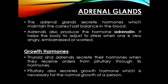Now let's discuss the adrenal glands. Adrenal glands secrete hormones that maintain the correct salt balance in the blood. Adrenal glands also produce the hormone adrenaline, which helps the body adjust to stress when one is very angry, embarrassed, or worried. That is why adrenaline is also called the stress hormone.